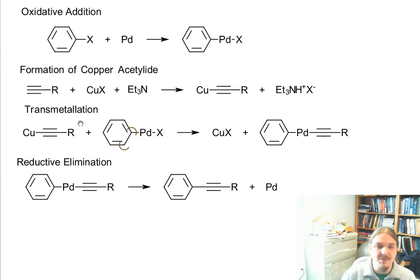That regenerates the copper halide that can be used in another step or to go back and form another copper acetylide. And so you don't actually need a full equivalent of copper for this reaction to work. And it generates a palladium compound that has both our aromatic ring and our acetylide on it.